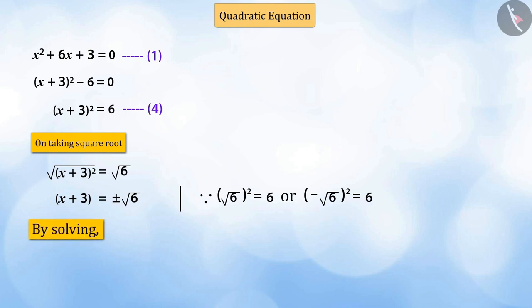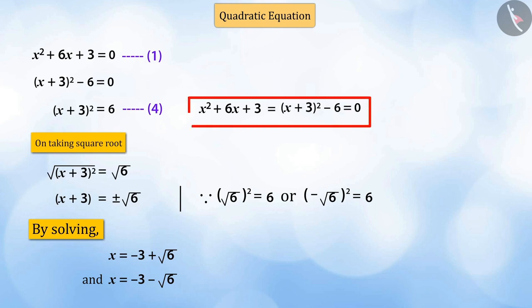Therefore, on solving the roots of the equation, x is equal to minus 3 plus square root of 6 and x is also equal to minus 3 minus square root of 6. Thus, we have found the root of the given quadratic equation by expressing it in the form x plus 3, the whole square, minus 6 equal to 0.